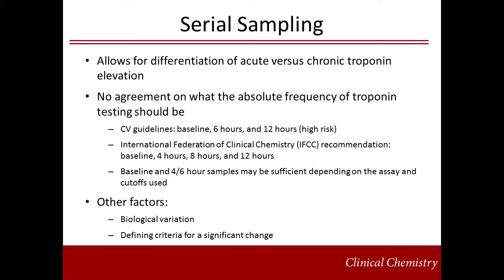Use of a serial sampling strategy allows for differentiation of an acute infarction versus chronic troponin elevation. There is no absolute agreement about the timing of serial samples. Cardiology guidelines recommend baseline and 6-hour samples, with 12-hour samples drawn in patients with high suspicion or risk of MI. The International Federation of Clinical Chemistry recommends 0, 4, 8, and 12-hour samples, although it is widely recognized that baseline and either a 4- or 6-hour sample will be sufficient for rule-in/rule-out purposes, depending on the assay and cut-offs used. Biological variation — both short-term and long-term — may influence serial sampling as well, and there is currently a lack of clear definition of the criteria which defines what a significant change really is.